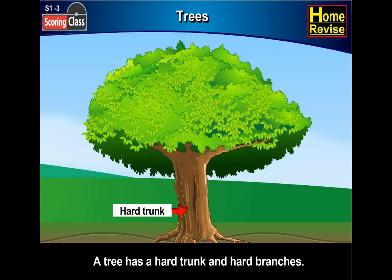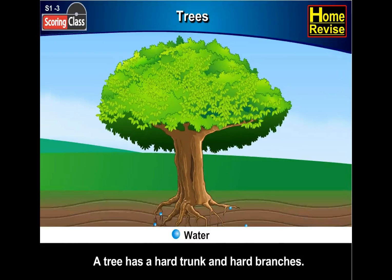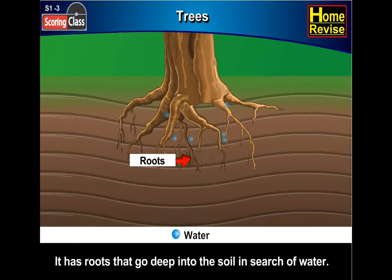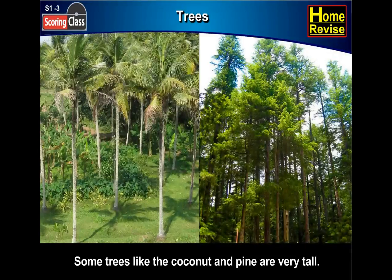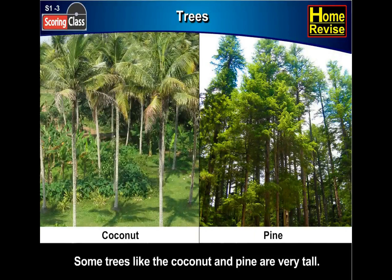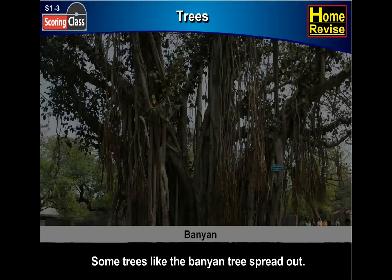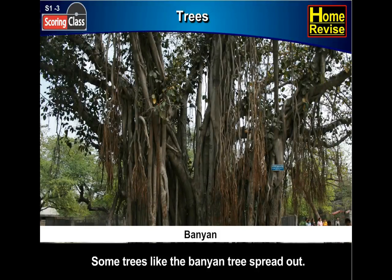A tree has a hard trunk and hard branches. It has roots that go deep into the soil in search of water. The branches of the tree bear leaves, flowers and fruits. Some trees like the coconut and pine are very tall. Some trees like the banyan tree spread out.